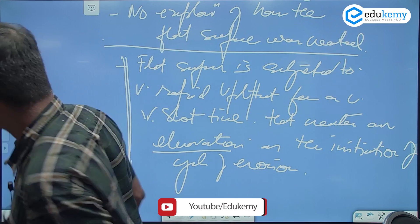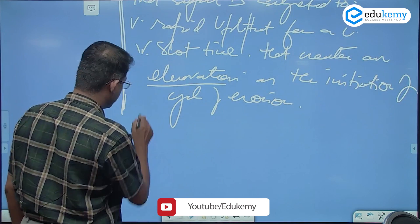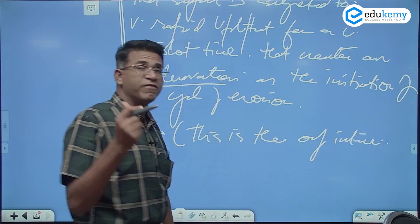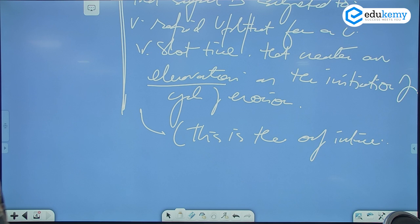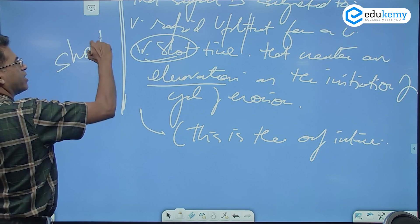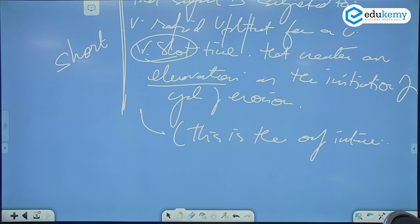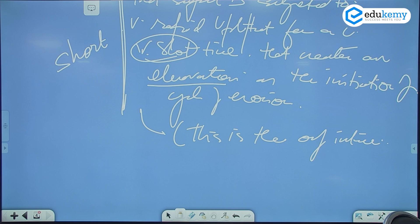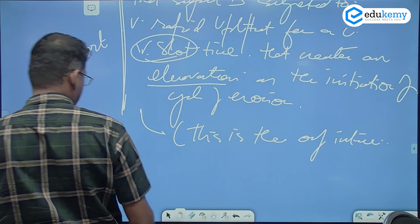So you can add a point here, that this is the only instance, the only instance where Davis acknowledges, for a very, very short time, small time span. This is the only instance where Davis includes the possibility of internal endogenic processes in the creation of the initial landscape. And thereafter...